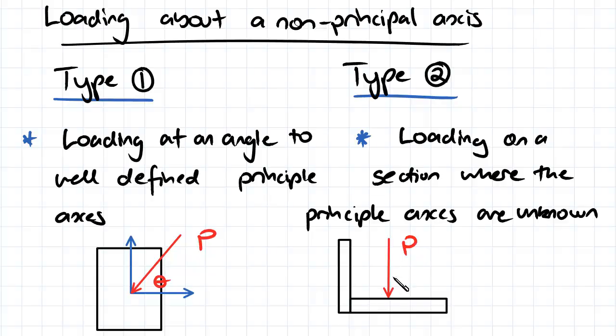We'd first probably work out the second moment of area about the local axes and then convert that into the second moment of area about your principal axes.